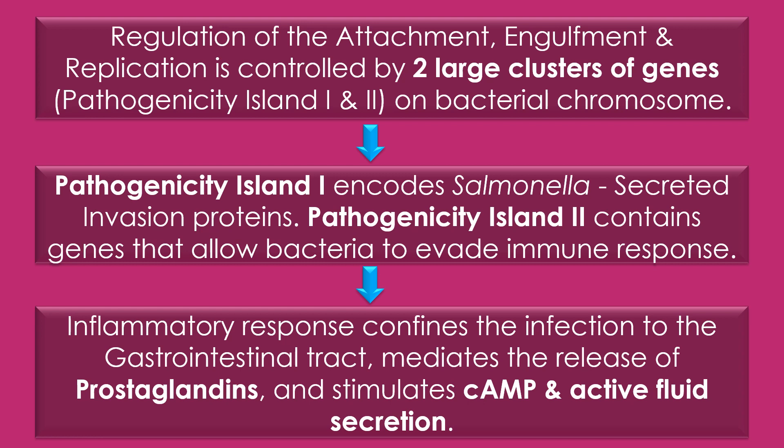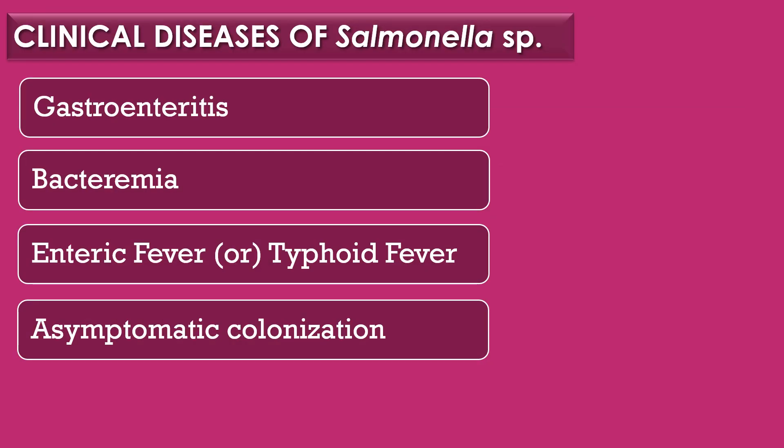Pathogenicity island 1 encodes Salmonella secreted invasion proteins, and pathogenicity island 2 contains genes that allow the bacteria to evade the host immune response. Finally, the inflammatory response confines the infection to the gastrointestinal tract, mediating the release of prostaglandins and stimulating cAMP and active fluid secretions. Salmonella species results in four clinical diseases: gastroenteritis, bacteremia, enteric fever or typhoid fever, and asymptomatic colonization.